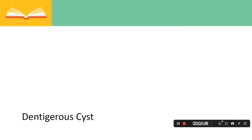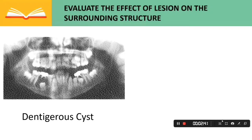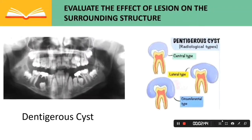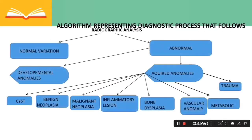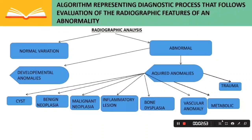Next, in evaluating the effect of the lesion on surrounding structures, examples include displacement of teeth seen in dentigerous cysts. Here is the algorithm representing the diagnostic process that follows evaluation of radiographic features of an abnormality.